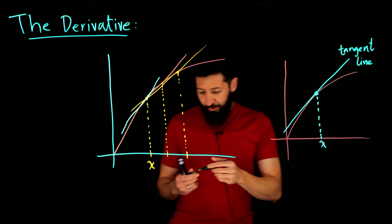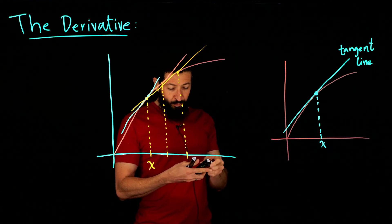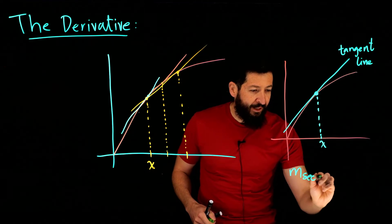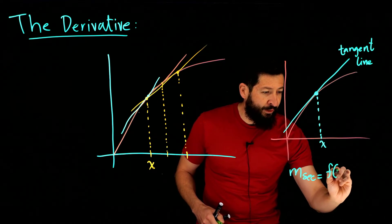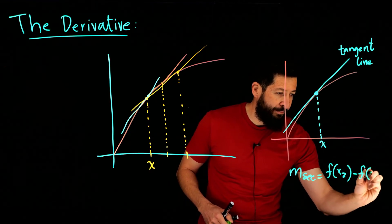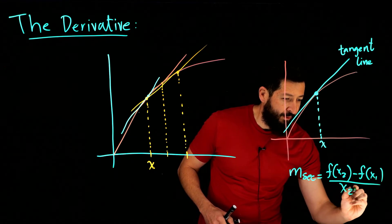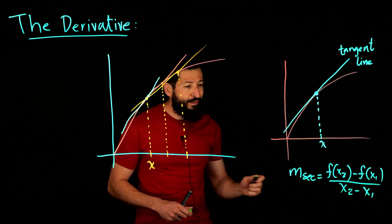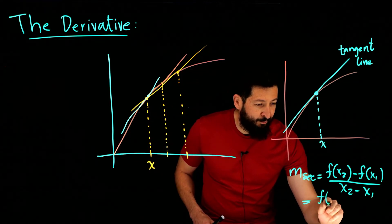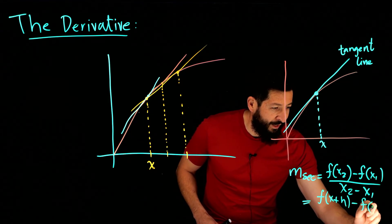Let's try to compute with the idea that we have what would the slope be. Remember we wrote the slope for the secant line as f of x2 minus f of x1 over x2 minus x1. Well what happens now if I let x2 be x plus h and x1 just be x?